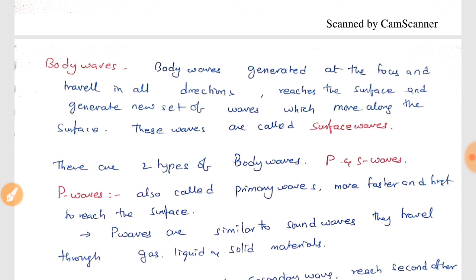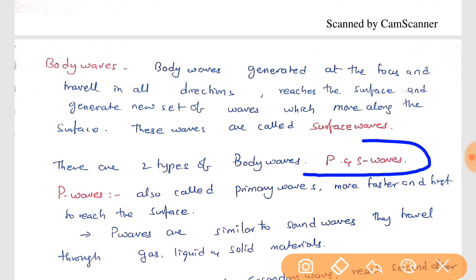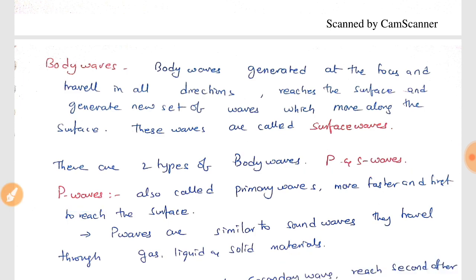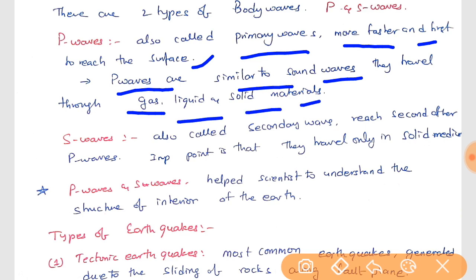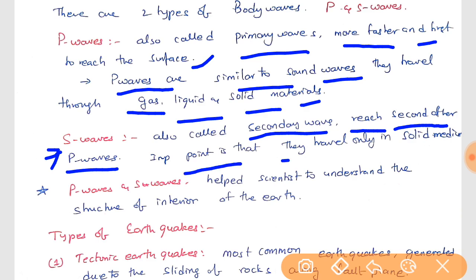Body waves are of two types: P waves and S waves. P waves are called primary waves, and they move faster, reaching the surface first. P waves are similar to sound waves and can travel through gas, liquid, and solid materials. S waves are called secondary waves and reach the surface after the primary waves. An important point is that S waves travel only in a solid medium — if they encounter the asthenosphere, which is liquid, they stop there.